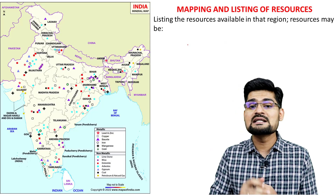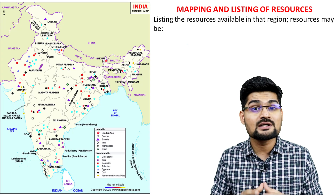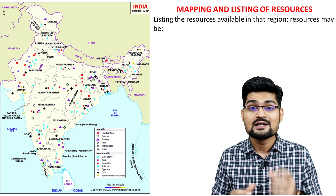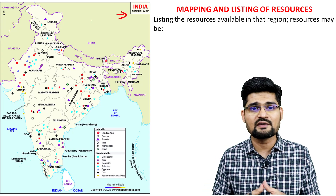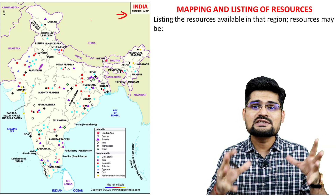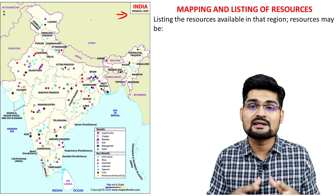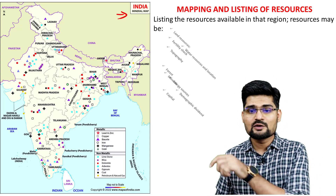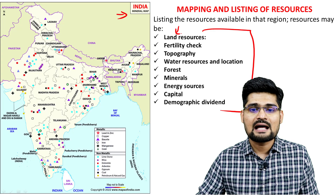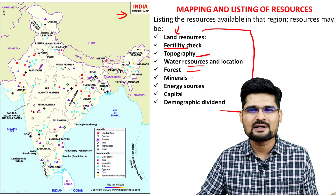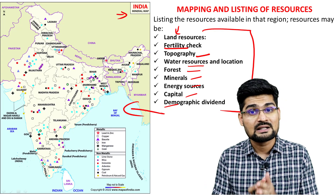Step two is mapping and listing resources, where geography comes into the picture through geographical analysis and mapping tools. For example, a mineral map of India signifies which areas have which kinds of minerals and accordingly helps plan particular industries. Resource listing includes land resources, fertility checks, topography, water resources, forests, minerals, energy, capital, and demographic dividend — all mapped and listed.